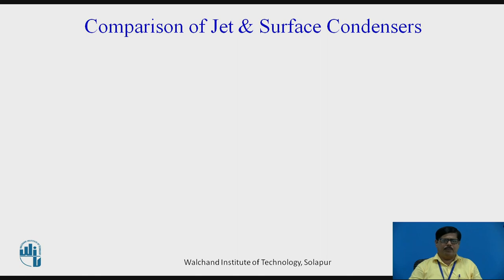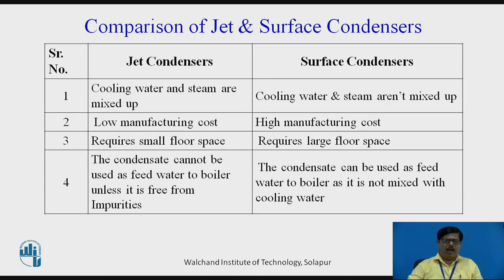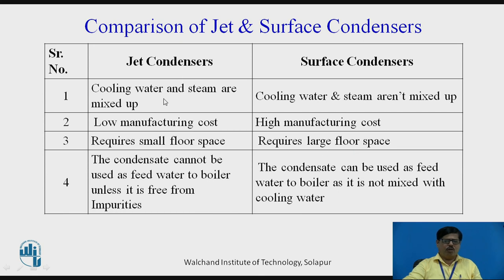Now let us see the comparison between jet and surface condensers. In case of a jet condenser, the cooling water and steam are mixed with each other, whereas in case of a surface condenser, they do not come in direct contact and are not mixed. In case of a jet condenser, because the construction is simple, their manufacturing cost is low, whereas in case of a surface condenser, as water tubes and headers are required, the manufacturing cost is higher. Jet condensers are relatively compact and require smaller floor space, whereas surface condensers require large floor space.